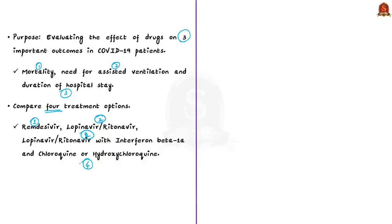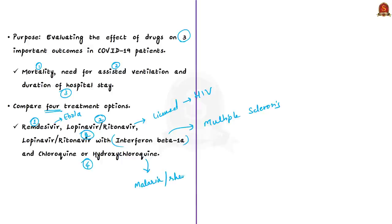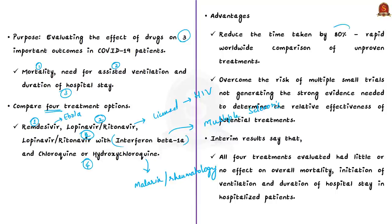Remdesivir was previously tested as an Ebola treatment. Lopinavir or ritonavir is a licensed treatment for HIV. Interferon beta-1a is used to treat multiple sclerosis, and chloroquine and hydroxychloroquine are used to treat malaria and rheumatology conditions respectively. The pressure which COVID-19 puts on health systems forced the WHO to speed up its trials. While randomized clinical trials normally take years to design and conduct, the Solidarity Trial will reduce the time taken by 80% by enrolling patients from different parts of the world in one single randomized trial.